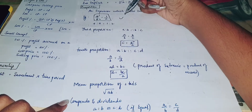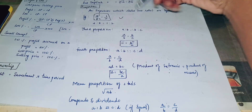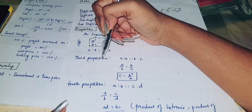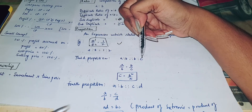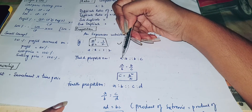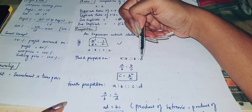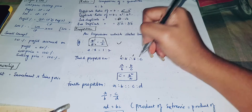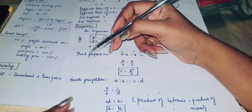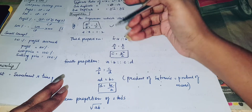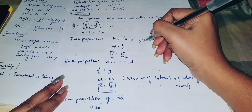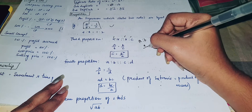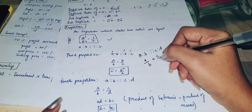We have different types of proportions. Third proportion: we have three terms — A, B, C — where A is to B is to B is to C. Fourth proportion: we have four different terms A, B, C, and D, where A by B equals C by D.